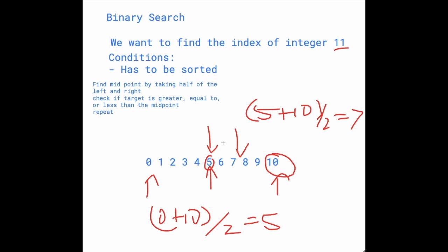And if the integer is smaller than the value at the midpoint, then we set the right to the midpoint. Yeah, so we're just going to keep doing this.